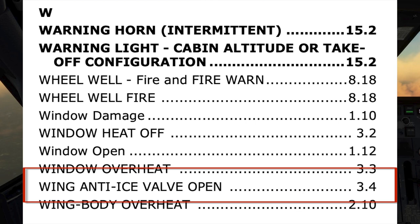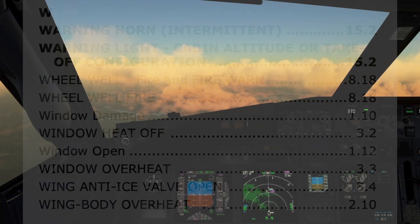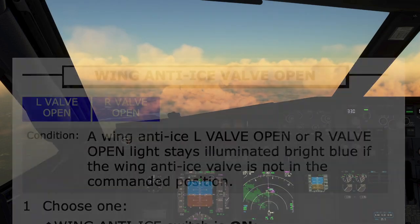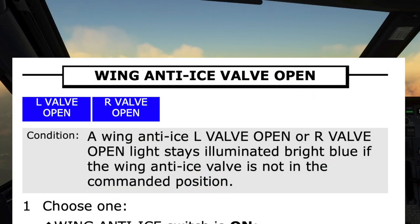Wing anti-ice valve open is found in the QRH in the alphabetical index under W. It directs us to go to page 3.4. The pilot monitoring then states the procedure title and condition and seeks agreement from the pilot flying that this is the correct checklist before continuing.